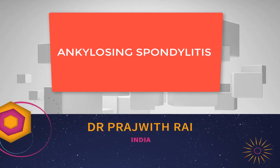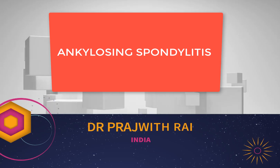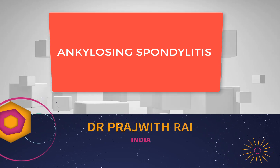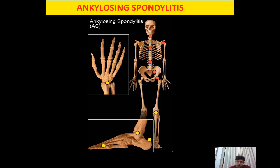Ankylosing spondylitis is an inflammatory arthropathy and enthesopathy predominantly involving the axial skeleton. In the axial skeleton, it mainly involves the vertebral bodies. Initially, it will involve the thoracolumbar region, and then later, after 20 years of ankylosing spondylitis, cervical involvement is commonly seen.